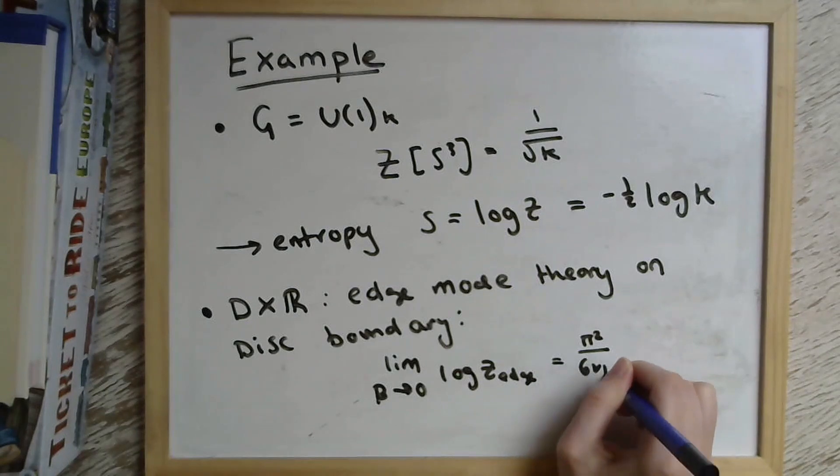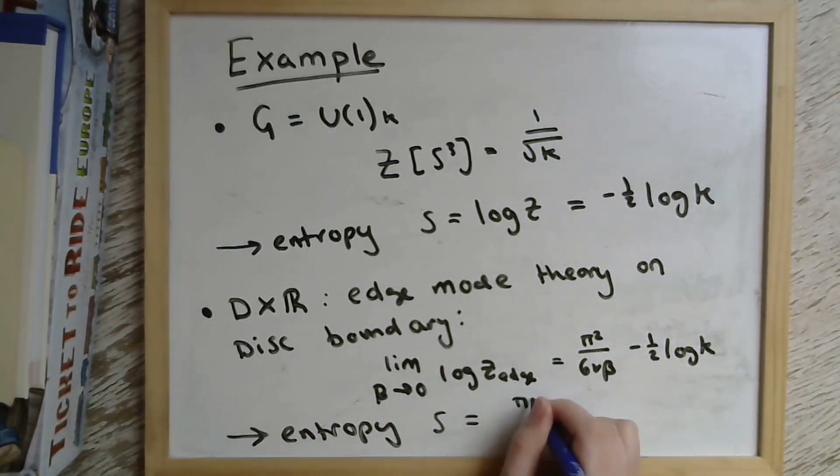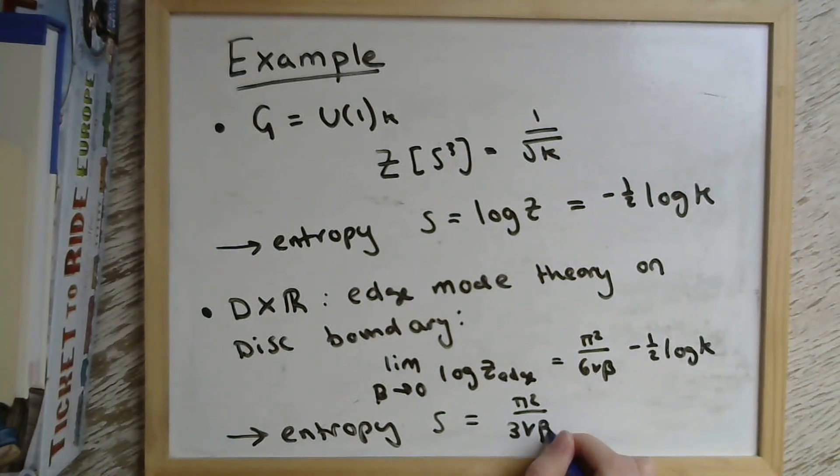So we can calculate the partition function of this edge theory and we can then take the high temperature limit of it, which is the same as putting the edge mode degrees of freedom to be very close to the de Sitter horizon or the edge of the disk. And we can immediately calculate the entropy again, which takes this form where Υ is the velocity of the excitation that goes around the boundary.